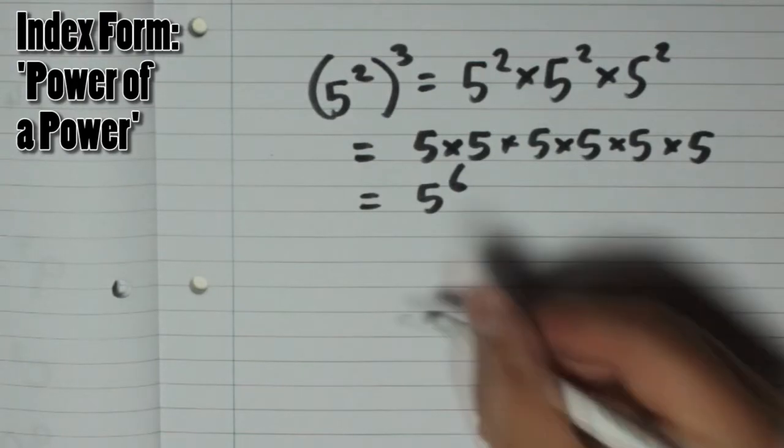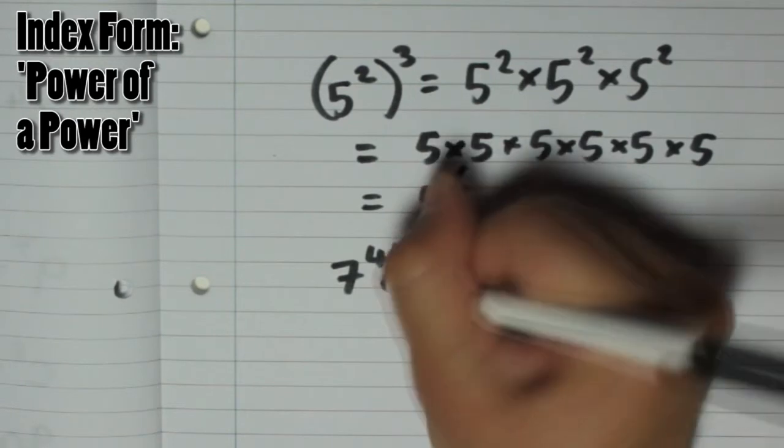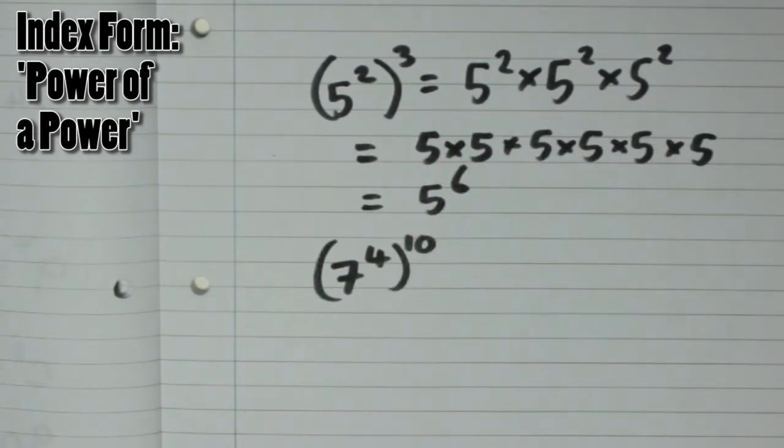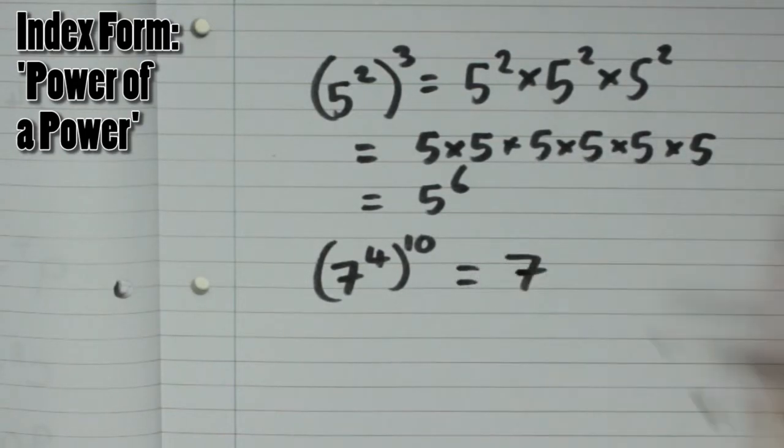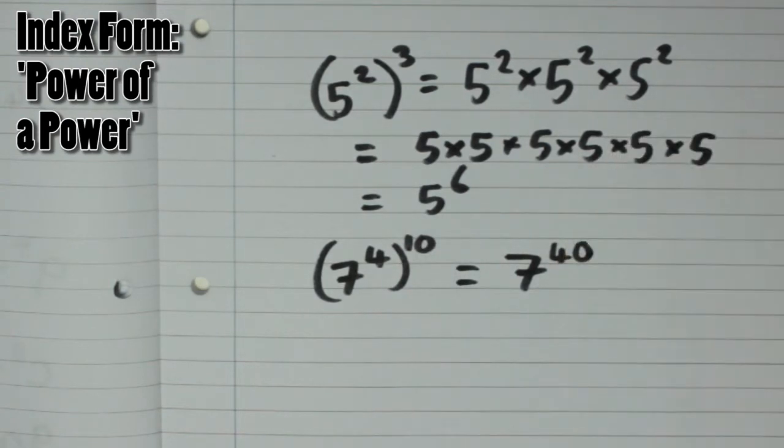So another example, let's say we had 7 to the power of 4, and then that was to the power of 10. You would have to multiply the powers, and you would get 7 to the power of 4 times 10, which is 40.